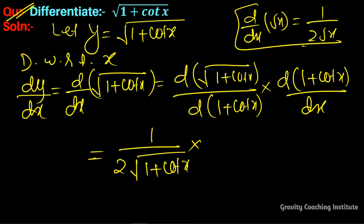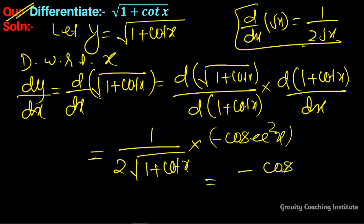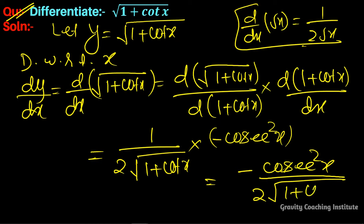The differentiation of cot x is minus cosec²x. So the final answer equals −cosec²x / (2√(1 + cot x)).